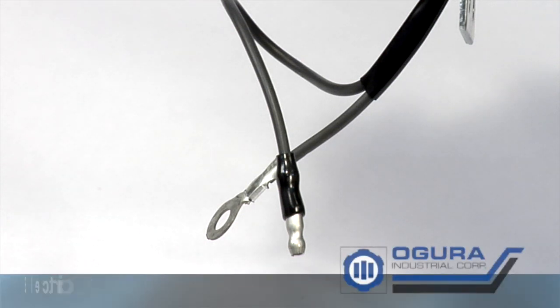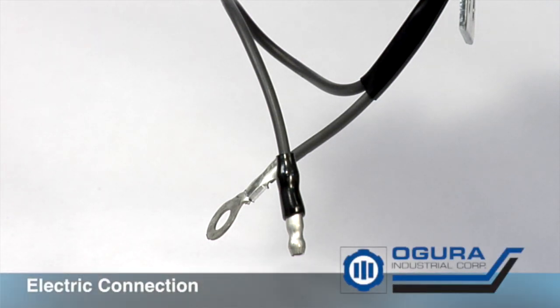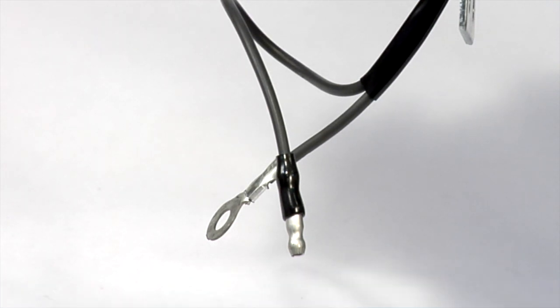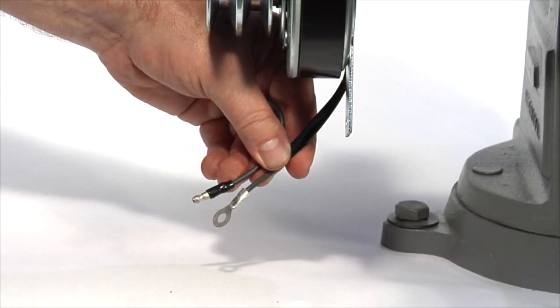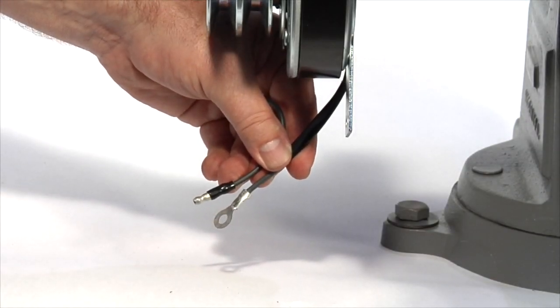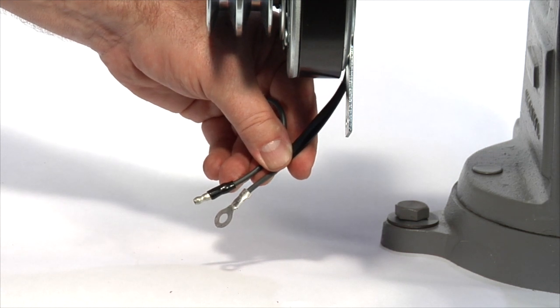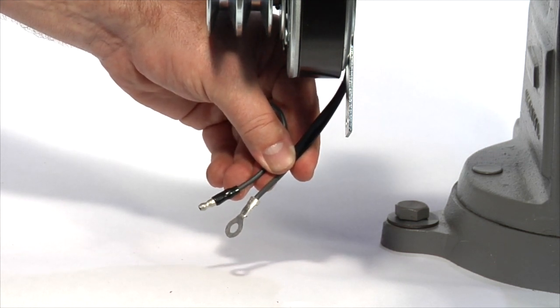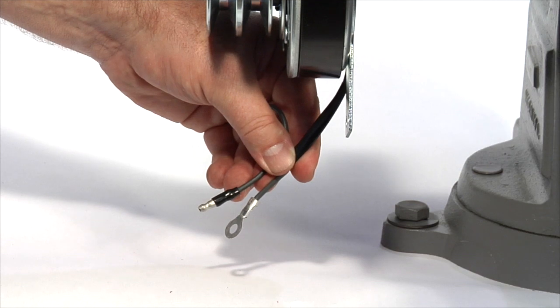General purpose clutches come with a variety of terminal options. The clutch coil is not polarized, so it doesn't matter to the clutch which is positive or negative. Prior to connecting the clutch to the power source, make sure the engine is not running and the clutch switch is in the disengaged mode.